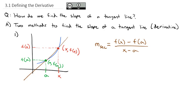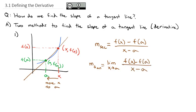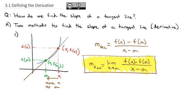The way we make that secant line into a tangent line is we take x and move it closer and closer to a. We move x to a, and then that line becomes less secant and more tangent. We know how to express that: the slope of the tangent line is the limit as x approaches a of f(x) minus f(a) all over x minus a. That is our first important formula for how to find the slope of the tangent line.